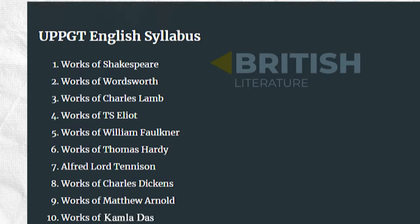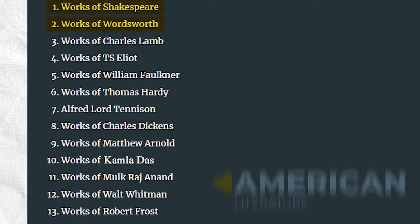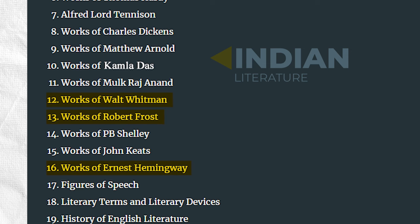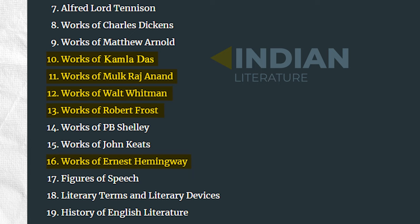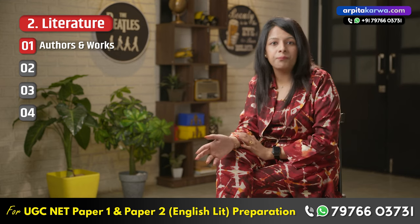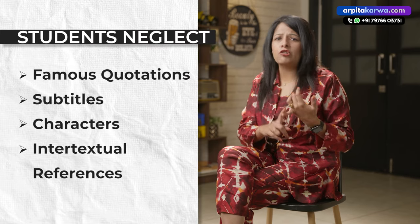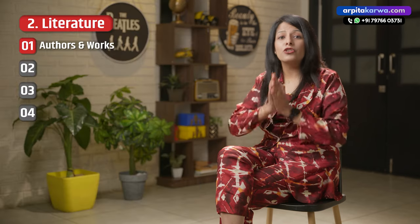The first topic under literature is Authors and Their Works, which contributes to almost 50 to 60 percent of questions in the paper. These authors are prominent figures from British literature like William Wordsworth and William Shakespeare, or from American literature such as Robert Frost, Walt Whitman, and Ernest Hemingway. There are also questions from Indian literature like Kamala Das and Mulk Raj Anand, and even African writers like Chinua Achebe. The most common mistake students make is just studying the summaries of these authors and neglecting other details such as famous quotations, subtitles, characters, and intertextual references.